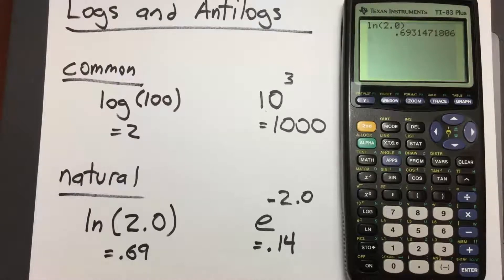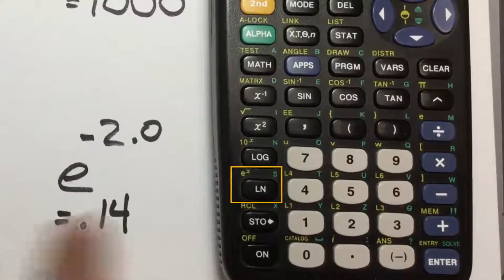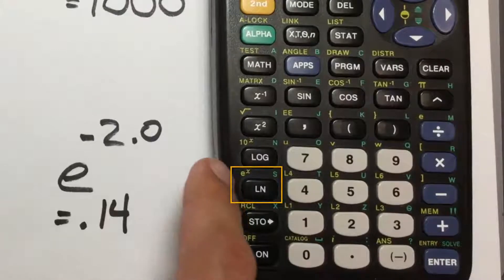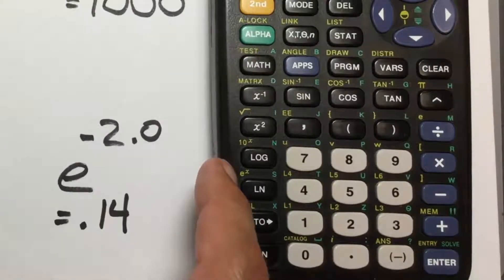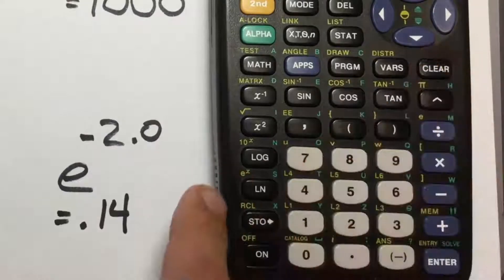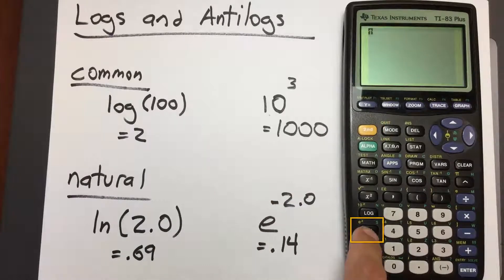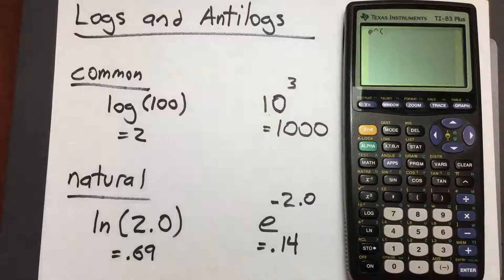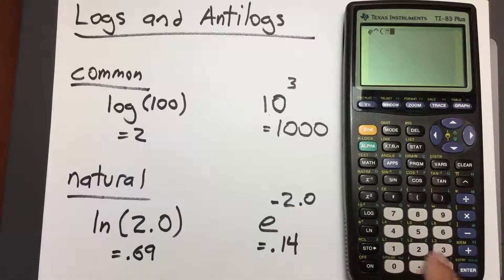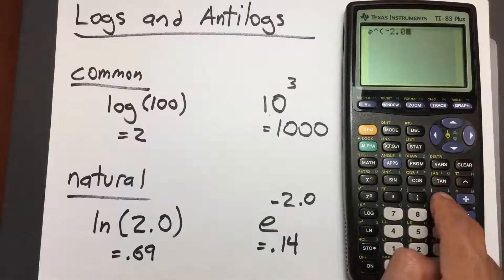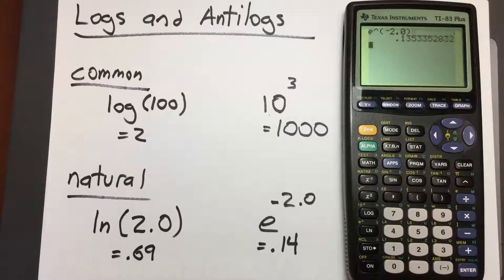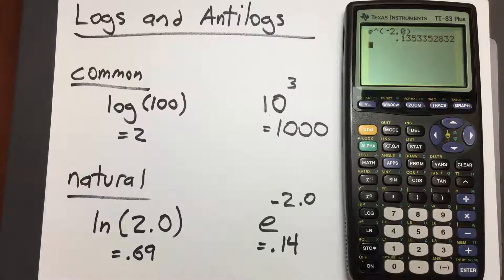To get the anti-natural log, or e exponential, right above the LN key we have e raised to the x. Clear the screen, press 2nd, and then e raised to the x. Now we have e raised to something. Enter the number above the e: negative 2.0. Close the parentheses and press enter. We get 0.135, which we round to 0.14.